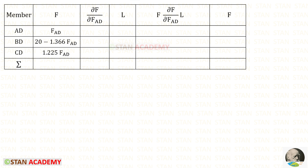Now we have to make a table. In the table, first we enter all of the members, then we enter the member forces we have just found. Now we differentiate the member forces with respect to FAD. For FAD it will be 1. For the constant term (20), it will be 0. For FAD the differentiation is 1; 1 into minus 1.366 gives minus 1.366. For FAD the differentiation is 1; 1 into 1.225 gives 1.225.